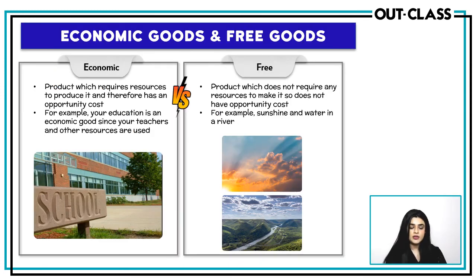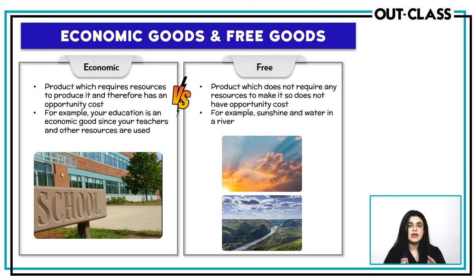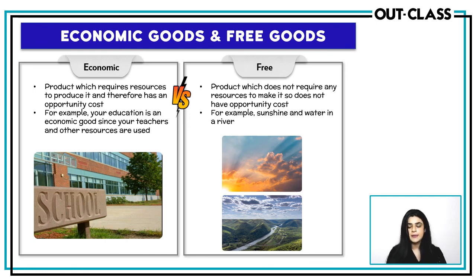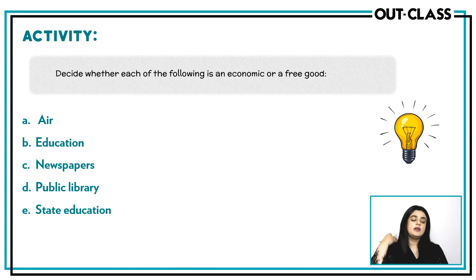Economic goods and free goods. Economic goods are goods that require resources to produce — for example, to make a pen, you need to gather resources and assemble them. Free goods, just as the name suggests, are available freely and readily for use and are basically natural resources — sunshine, water, and rivers are all examples of free goods.